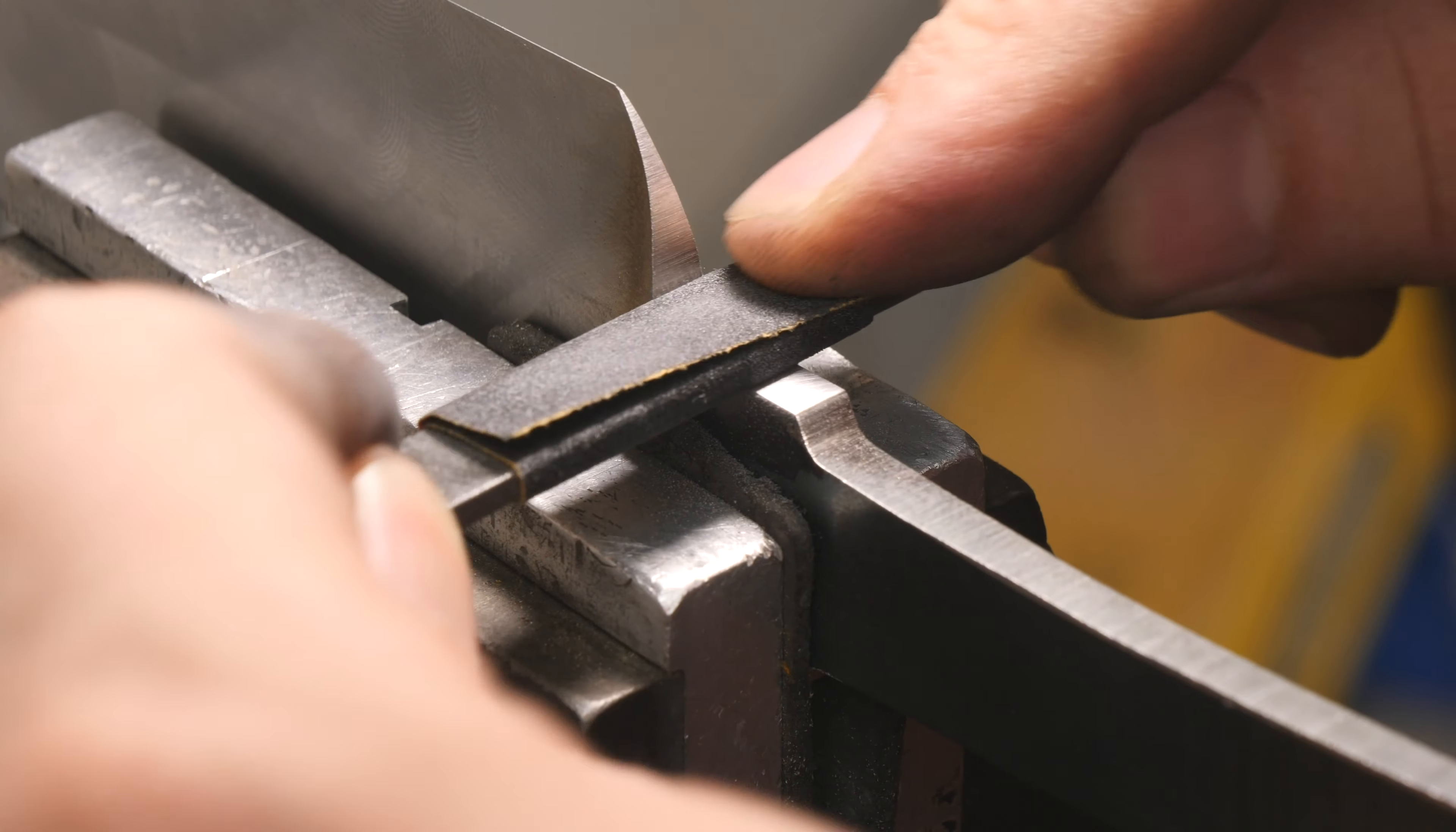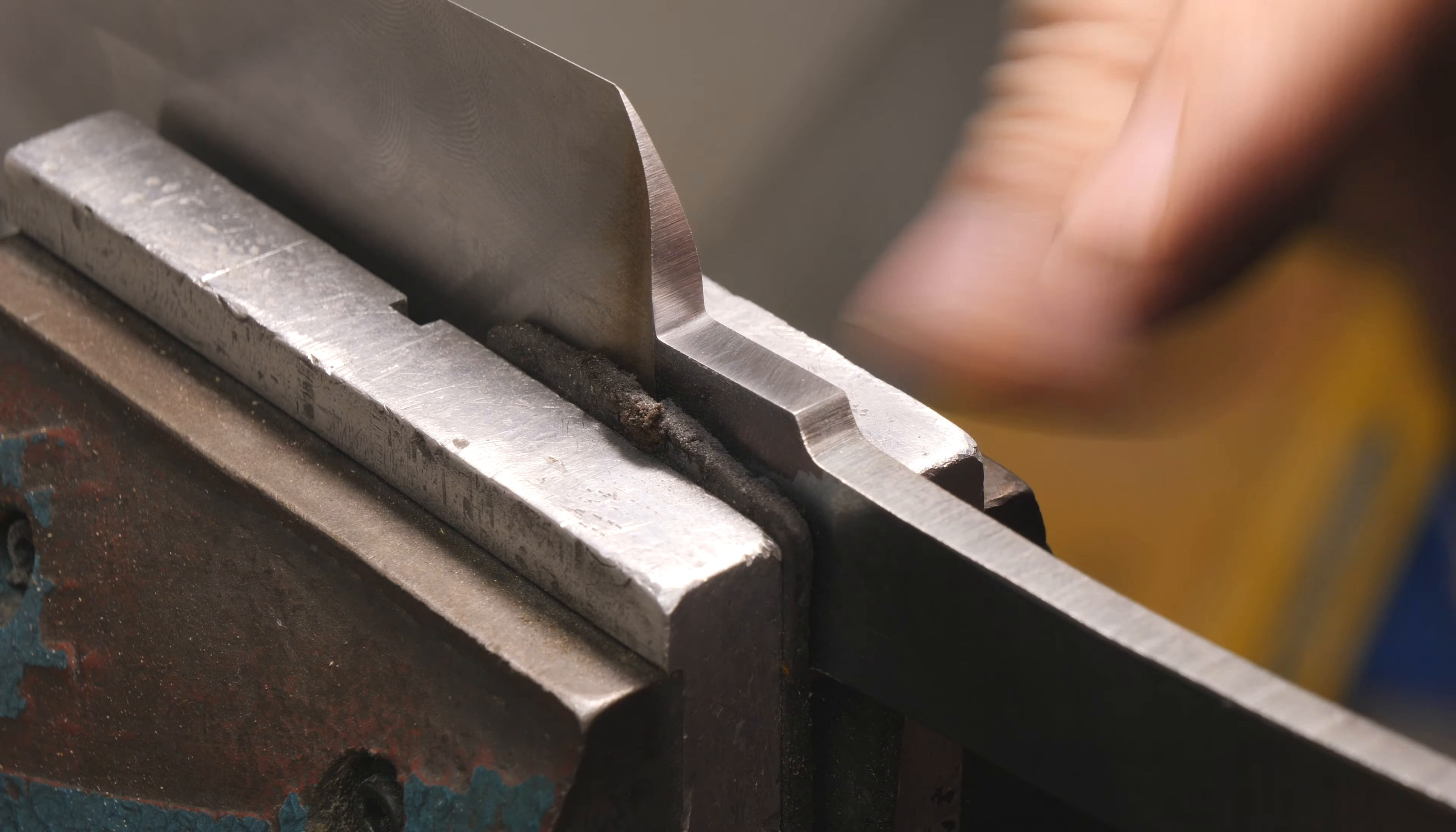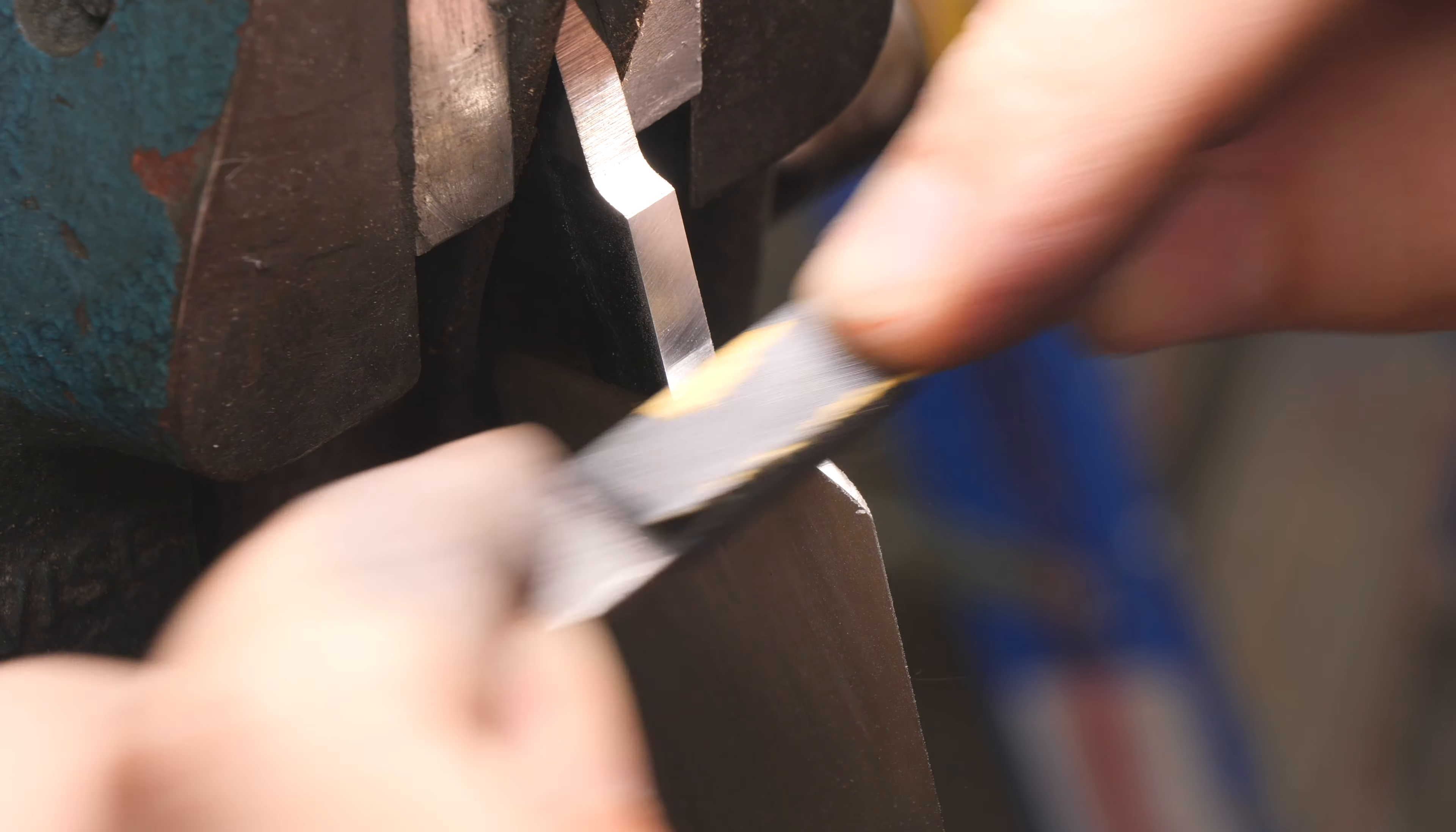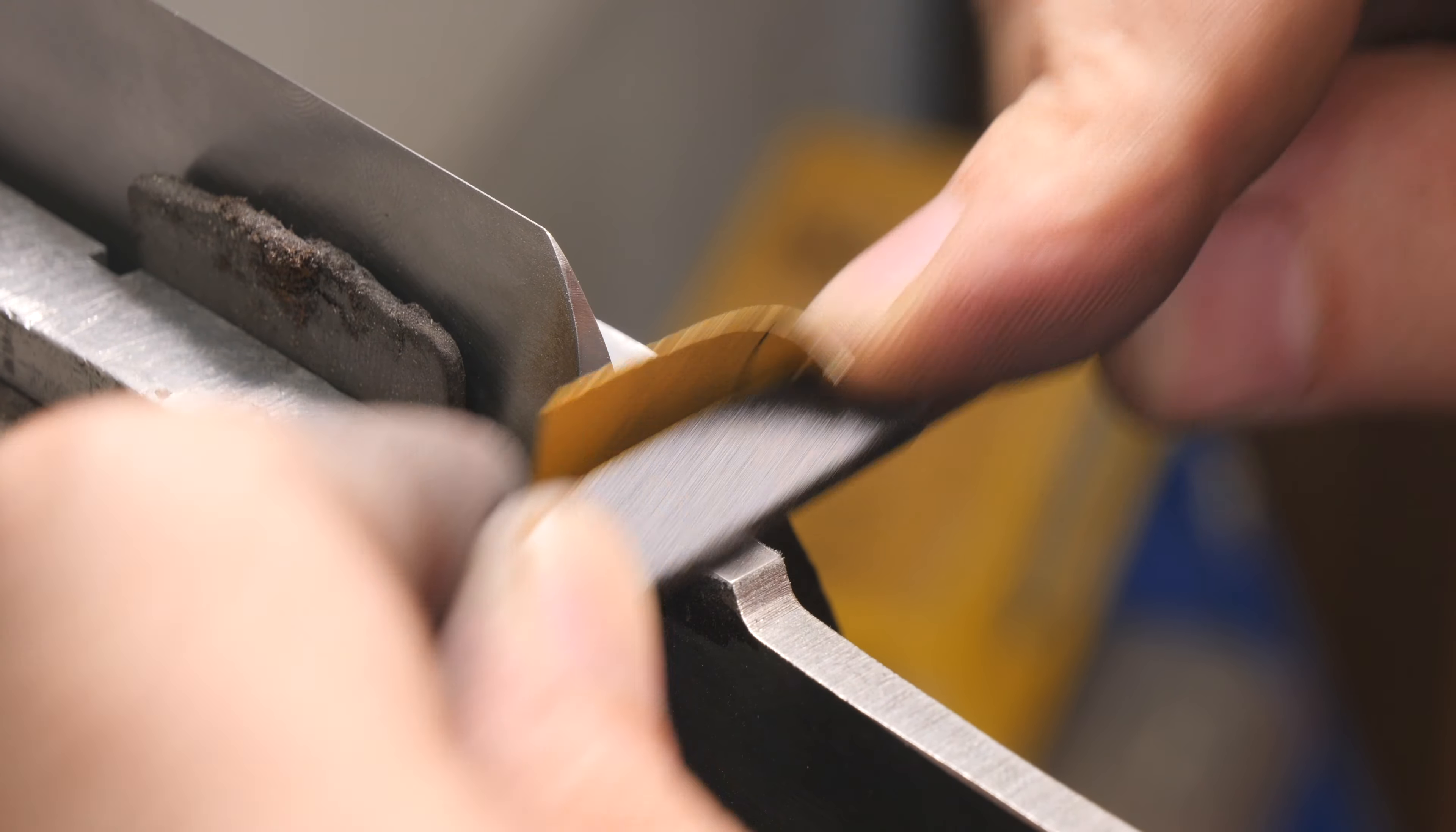The bottom of the ricasso, the spine of the blade and the choil area are all ready for some hand sanding now. You want to keep your sandpaper nice and flat. If you don't keep your paper flat enough you kind of wash out the corner and it won't be as defined as it could have been.